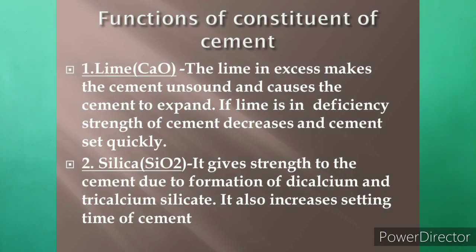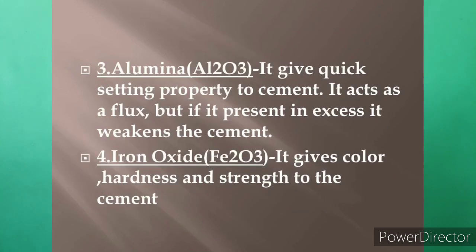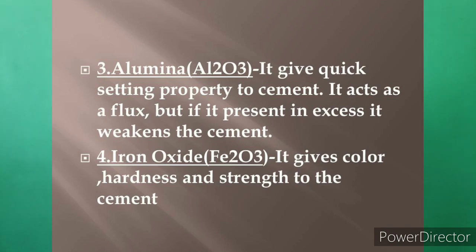Alumina (Al₂O₃) gives quick-setting property to cement and acts as a flux, but if present in excess it weakens the cement. Iron oxide (Fe₂O₃) gives gray color, hardness, and strength to the cement.